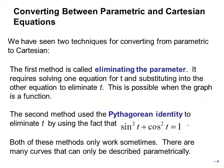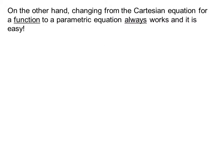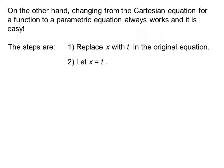Both of these methods only work sometimes. There are many curves that can only be described parametrically. On the other hand, changing from the Cartesian equation for a function to a parametric equation always works and it is easy. The steps are: one, replace x with t in the original equation. Two, let x equal t.